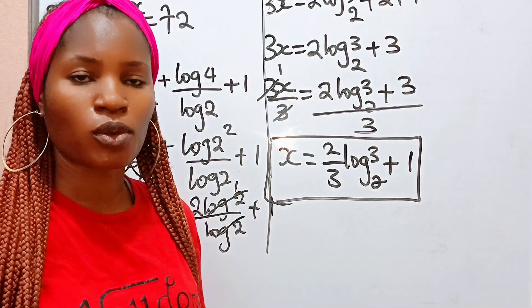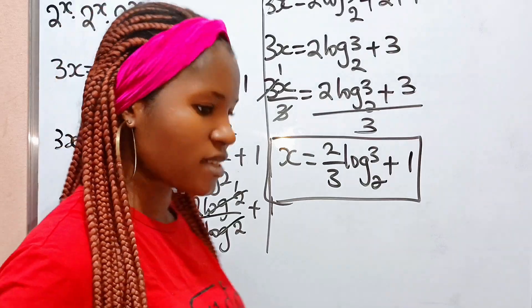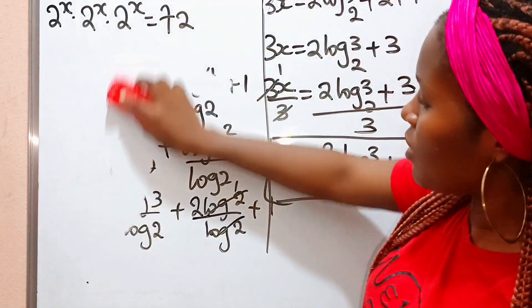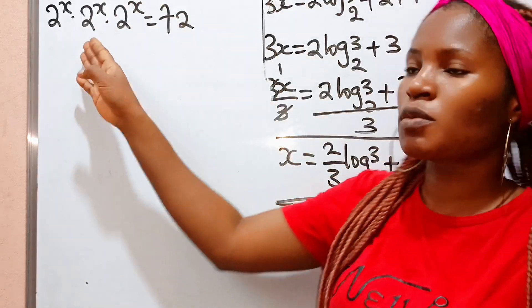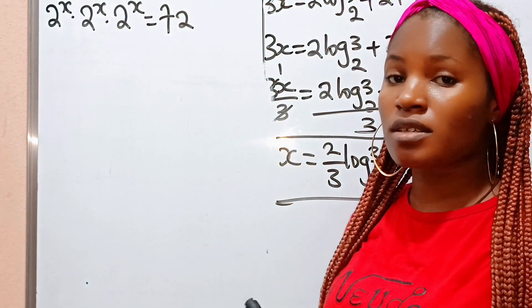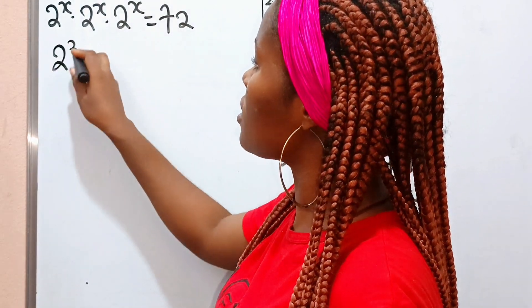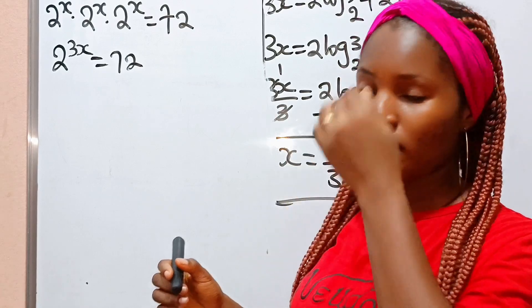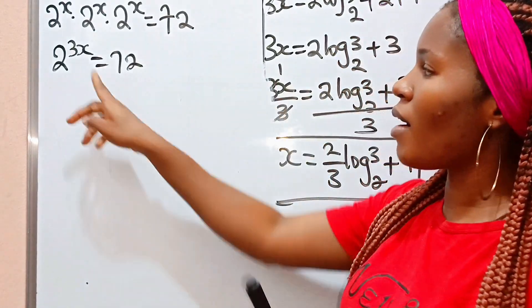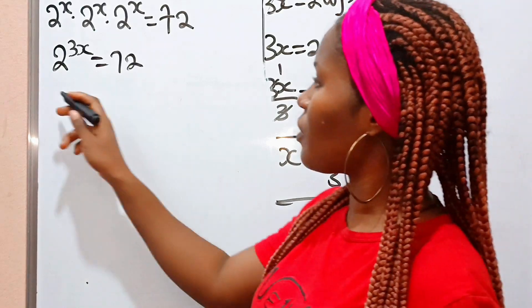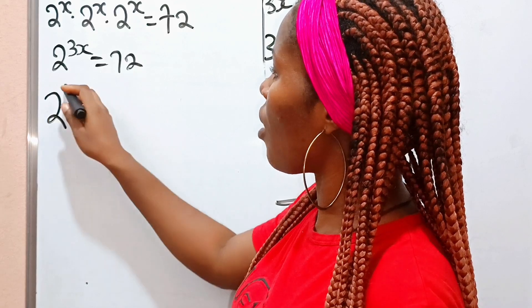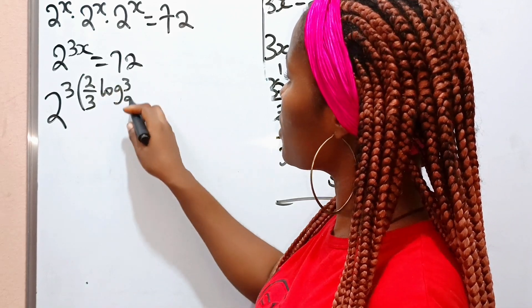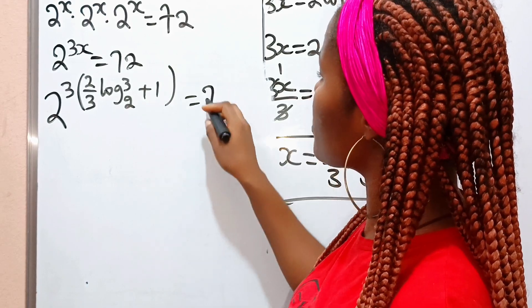Now for the most interesting part — let us prove that the answer we got is correct. The original question says 2 to the power of x, multiplied by 2 to the power of x, multiplied by 2 to the power of x, is equal to 72. We simplified this to 2 to the power of 3x equals 72. So we substitute our x, giving us 2 to the power of 3 times the bracket two-thirds log 3 base 2 plus 1, is equal to 72.